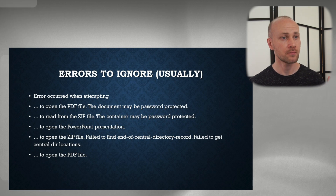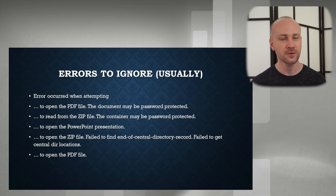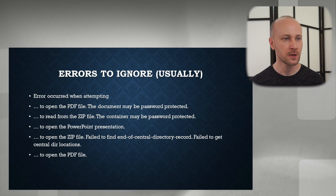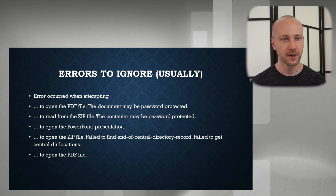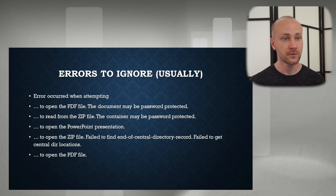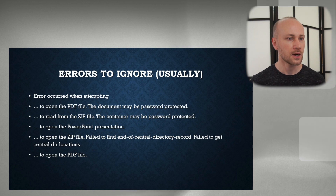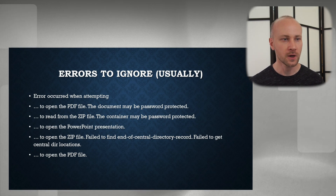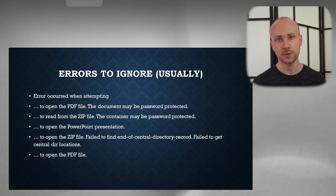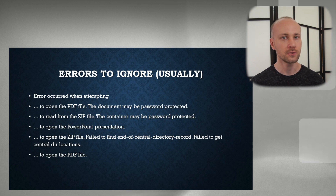Next, we have normal processing errors that aren't really errors — they're more like notifications letting you know what's happening. For example, "Error opening a PDF or a zip file." Well, if documents are password protected, of course the system will not be able to get metadata or extracted text from it. So it's just letting you know: if you have a password, you need to put it in the password bank and retry. If you don't, just move on. Same deal if you get an error opening PowerPoint, a zip file, or PDF — it may be a corrupt file, so you can go to the error message and do some checking.